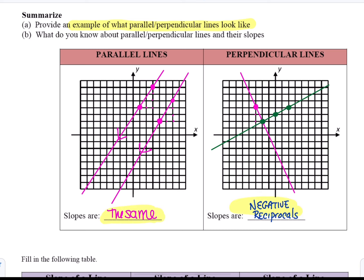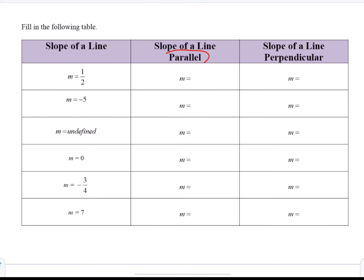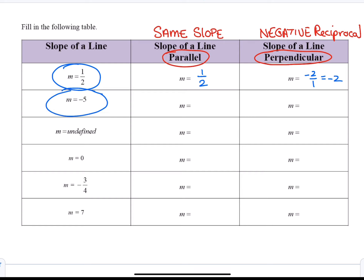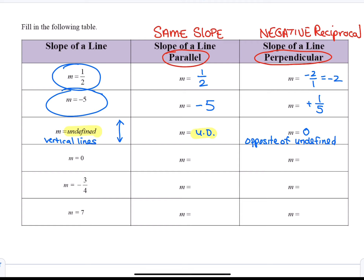In the following table, we fill in slopes quickly. A parallel line will have the same slope; a perpendicular line will have the negative reciprocal slope. If the slope of the line is 1 half, the parallel slope is also 1 half and the perpendicular slope is negative 2 over 1. If the slope is negative 5, the parallel slope is negative 5 and the negative reciprocal is positive 1 over 5. An undefined slope is a vertical line, so its parallel is also undefined, and the perpendicular is a horizontal line with slope 0. Conversely, if the slope is 0, the negative reciprocal is undefined. Parallel lines have the same slope; negative reciprocals are for perpendicular lines.